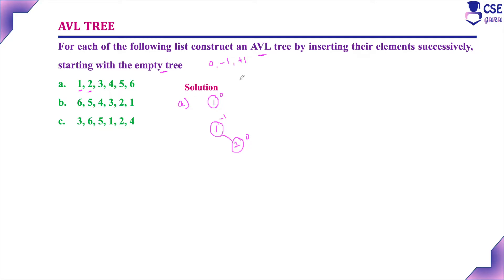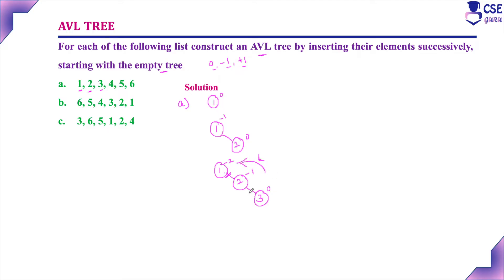Otherwise, we have to implement a rotation to convert the unbalanced AVL tree into a balanced one. Next, we have to insert element 3. Element 3 is greater than 1, so go to its right subtree, and 3 is greater than 2, so insert it as a right subtree. Now the balance factors are 0, minus 1, and minus 2, so here it is unbalanced. We have to implement a single left rotation to convert the unbalanced AVL tree into a balanced one.